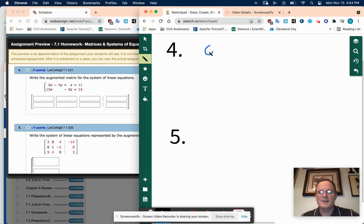So our top row is 6, negative 4, 1, 11. And our second row is 19, 0, negative 8, and 14.